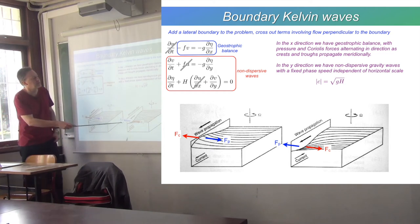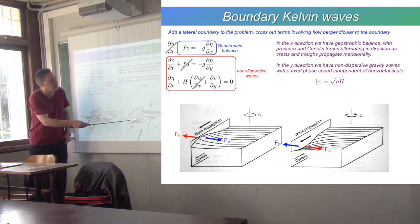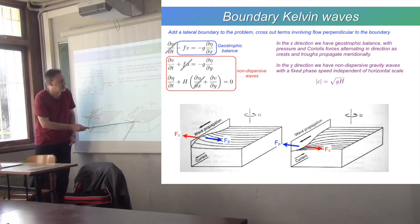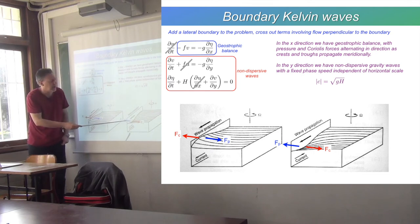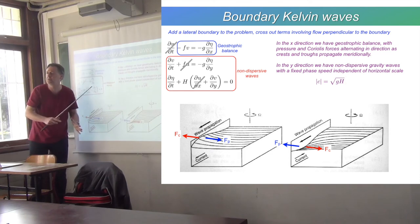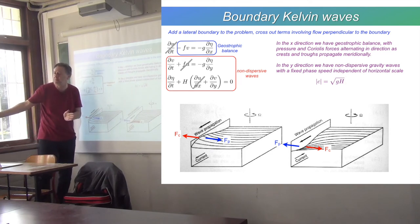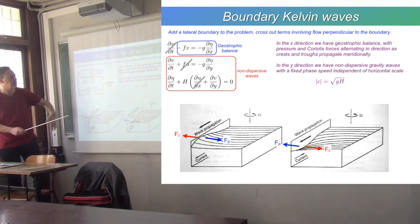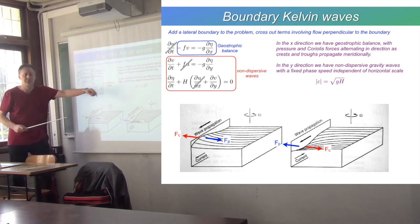The opposite situation: if you have a dip, then the pressure gradient will be pushing towards the wall, the compensating Coriolis force away from the wall, and associated with that is a northward current. Coriolis force is always to the right in the northern hemisphere. So as the wave goes up and down along the wall, the current goes back and forth.